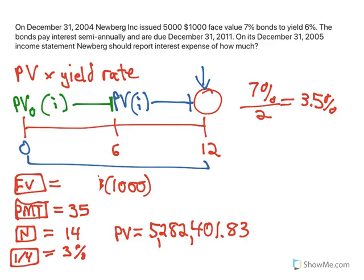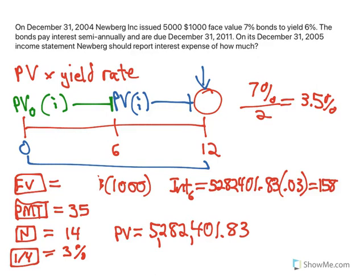So the idea is the interest expense that will be paid at time 6, or half a year in, is that $5,282,401.83 times the yield rate, because we're holding that amount of money at that yield rate of 3% over the 6-month period, and that will be an interest expense in the first 6 months of $158,472, rounded to the nearest dollar there.